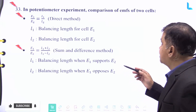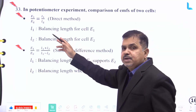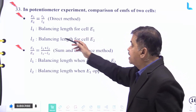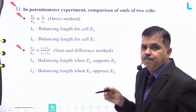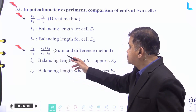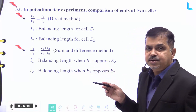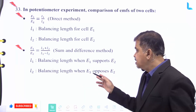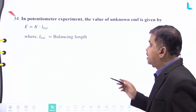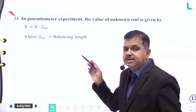In a potentiometer experiment, the comparison of EMFs of two cells is given by E₁/E₂ equal to L₁/L₂ (direct method), where L₁ is the balancing length for cell E₁ and L₂ for cell E₂. Using the sum and difference method, E₁/E₂ equal to (L₁ + L₂)/(L₁ − L₂), where L₁ is when E₁ supports E₂ and L₂ when E₁ opposes E₂. The unknown EMF is given by E equal to K × balancing length.